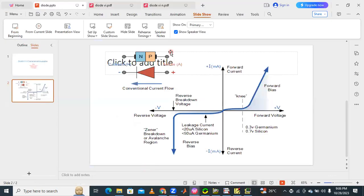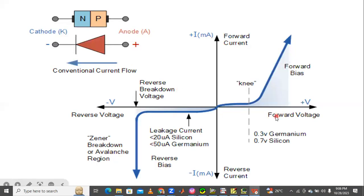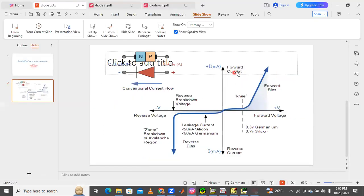In forward bias condition, when connected forward, we get the exponential current-rise characteristics. When connected in reverse bias, we get the flat leakage current characteristics near zero. These are the complete VI characteristics of the diode — both forward and reverse bias conditions.